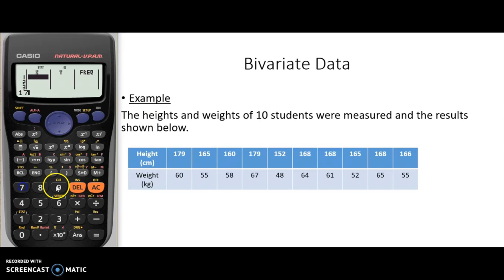Our first height is 179, press equals afterwards and you can see that it appears. Let's keep entering our heights: 165, then we've got 160.